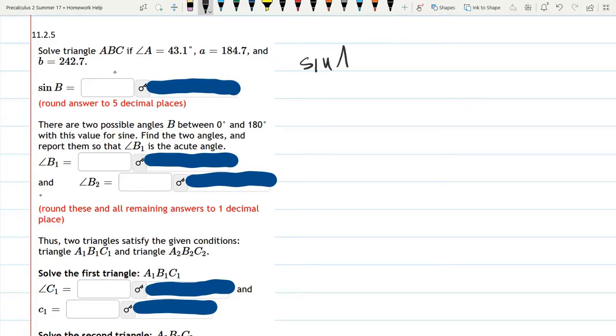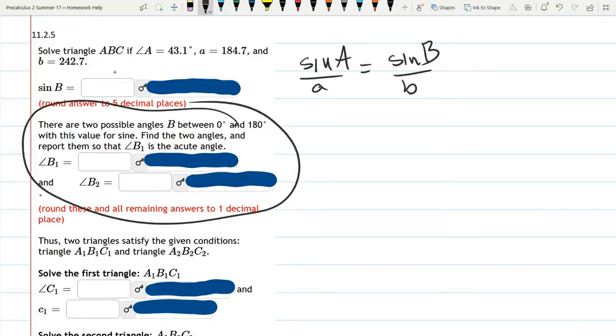So that is sine A over A equals sine B over B. Now, if you read ahead right here, we're looking for actually two angle B's. But let's first find sine B.